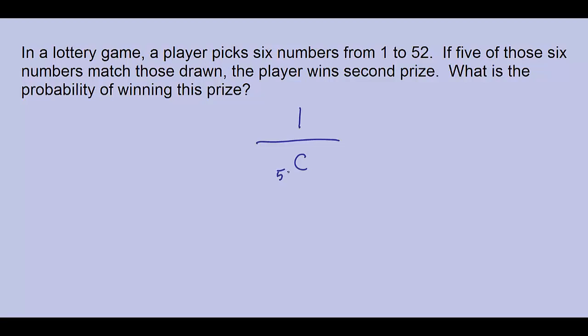Now I know there's 52 possibilities and I'm going to pick six of them. So if I was looking at the probability of winning first prize, that is getting six out of six correct, then it would be 1 divided by 52 choose 6.